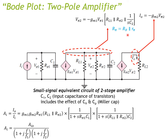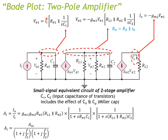After relating v_{π2} to v_{π1}, we relate v_{π1} to the input current i_i. The input current flows through the parallel impedance of R_{π1} and C₁, so v_{π1} = i_i × (R_{π1} ∥ Z_{C1}). From these relations we can write the overall current gain.